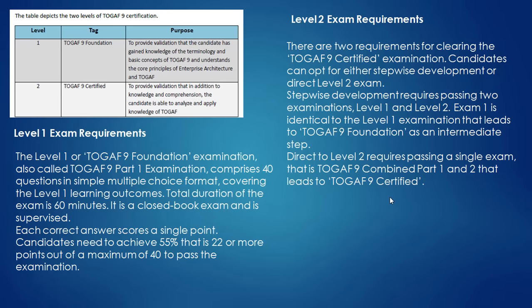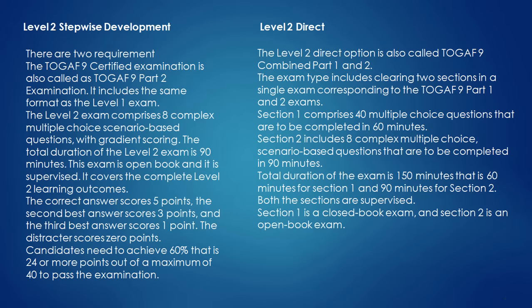The Level 1 exam is supervised — you go to a Prometric center to take it. Each correct answer scores a single point, and you need to achieve 55% — that is, 22 or more points out of 40 — to pass. For Level 2, there are two requirements for clearing the TOGAF 9 or 9.1 or 9.2 certification. It is a stepwise development requiring passing two examinations: Level 1 and Level 2. Exam 1 is identical to the Level 1 examination leading to TOGAF Foundation.